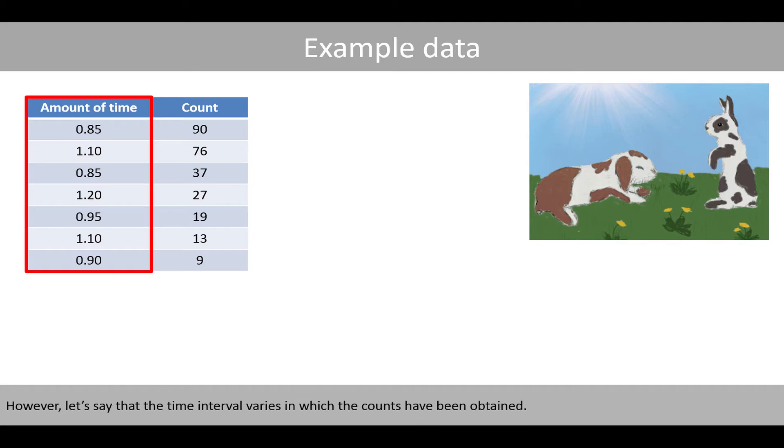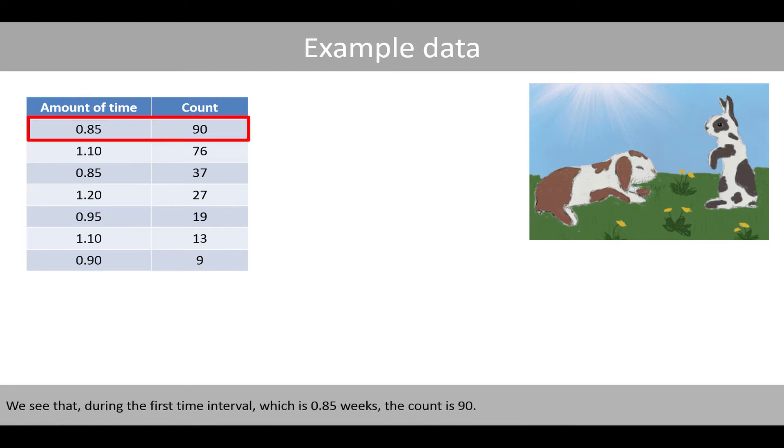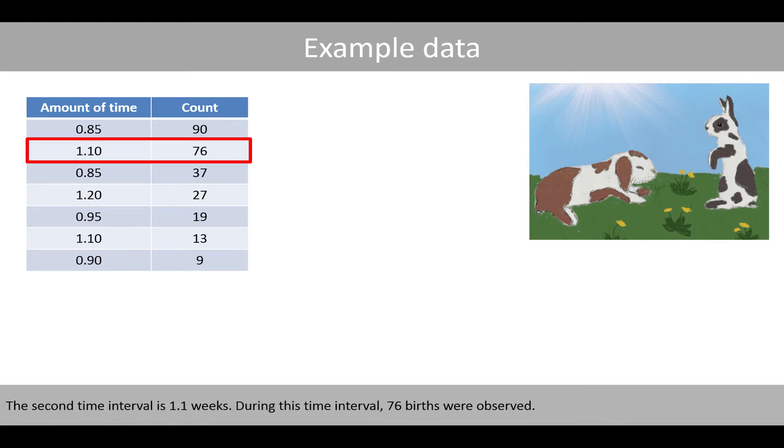However, let's say that the time interval varies in which the counts have been obtained. We see that during the first time interval, which is 0.85 weeks, the count is 90. The second time interval is 1.1 weeks. During this time interval 76 births were observed.